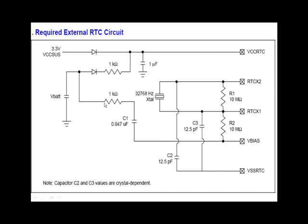In some motherboards, instead of taking the V-bias trigger from the battery source, they take it from the main VCC RTC line. It depends on the designer's concept of how they want to implement it.